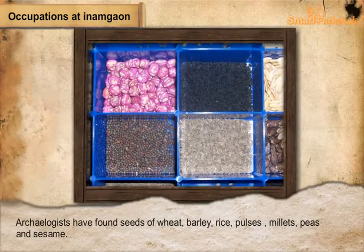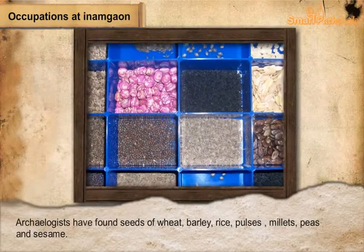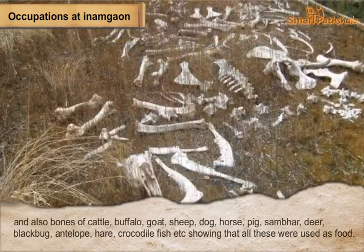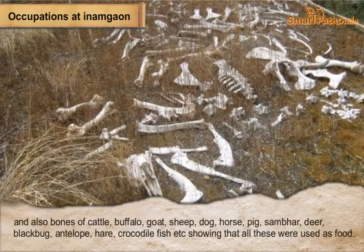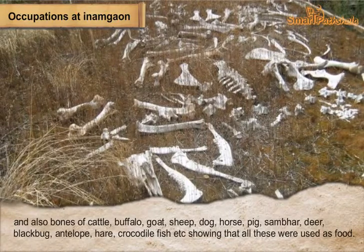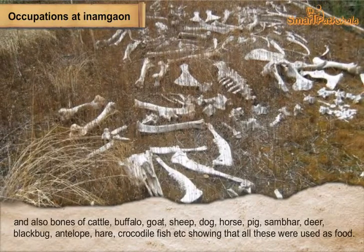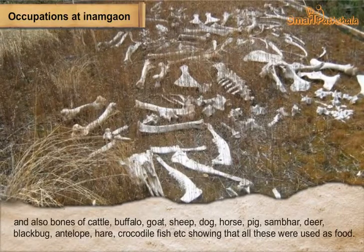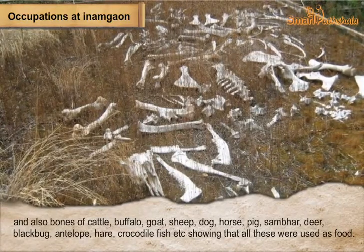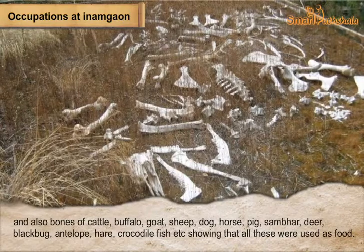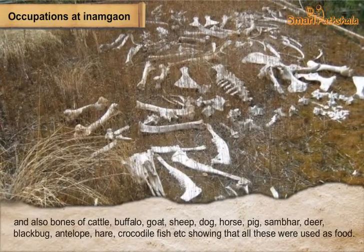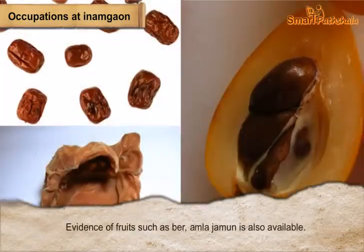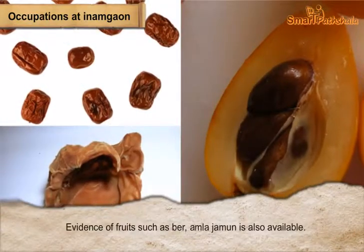Occupations at Inamgaon. Archaeologists have found seeds of wheat, barley, rice, pulses, millets, peas, and sesame, and also bones of cattle, buffalo, goat, sheep, dog, horse, pig, sambar, deer, antelope, hare, crocodile, fish, and others, showing that all these were used as food. Evidence of fruit such as ber, amla, and jamun is also available.